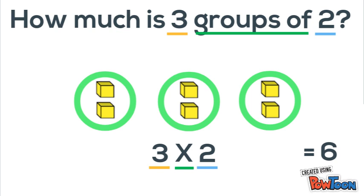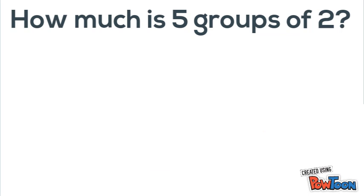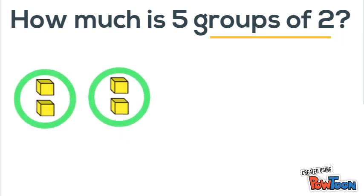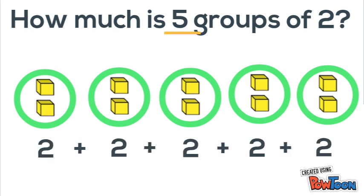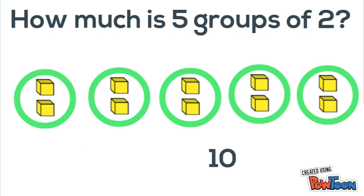Let's try it again. How much is five groups of two? Groups of two tells me that there are two in each group and that I need five groups. So we make five of those groups and two plus two plus two plus two plus two. In our head we can say two, four, six, eight, ten. So we say five times two is ten, because five times two means five groups of two.